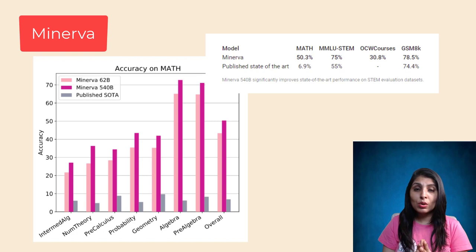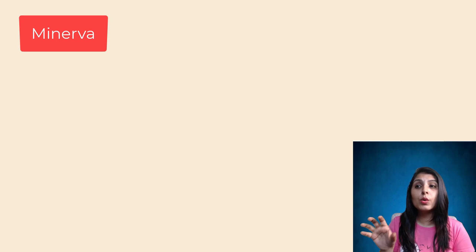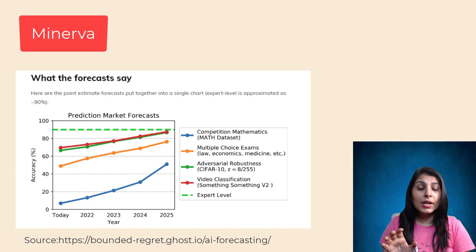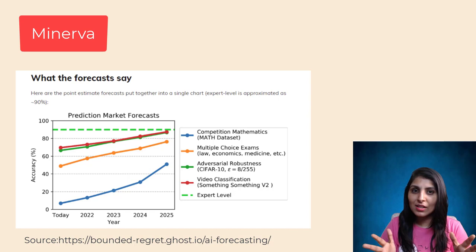Professional forecasters predicted that by 2025, AI would be able to achieve 50% accuracy on math. But we are in 2022, and Google has already achieved that accuracy—three years ahead of predictions.